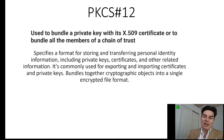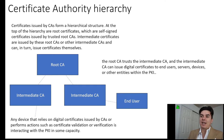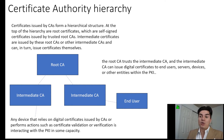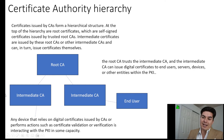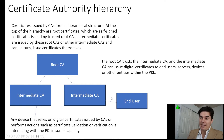Now we're going to look at what they mean by a chain of trust and the certificate authority hierarchy. A certificate authority hierarchy is a structure. Here we can see the root certificate authority, and it's interconnected with intermediate certificate authorities. This is the original certificate authority, and then you set up additional certificate authorities that actually issue the digital certificates.